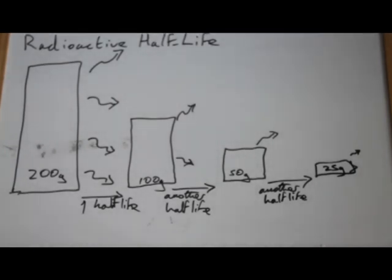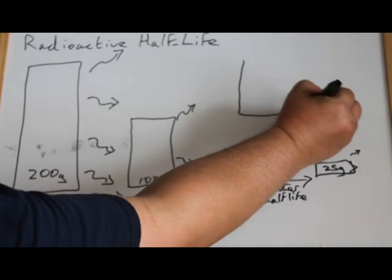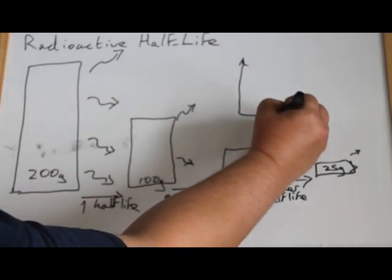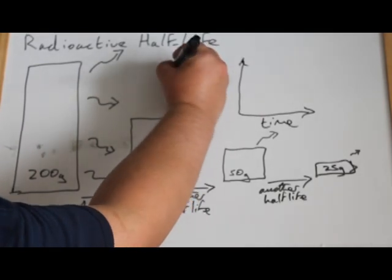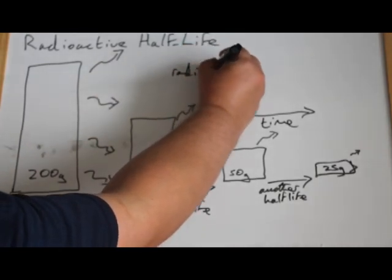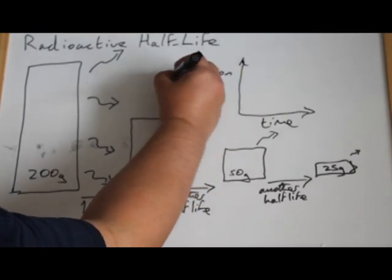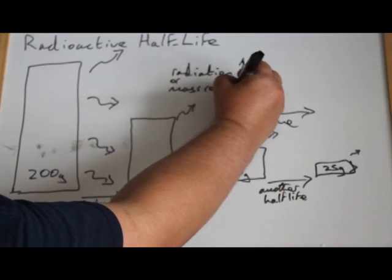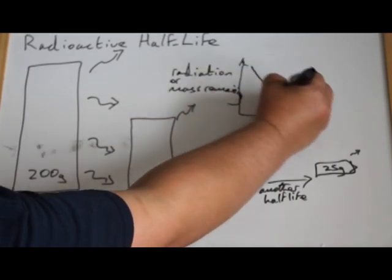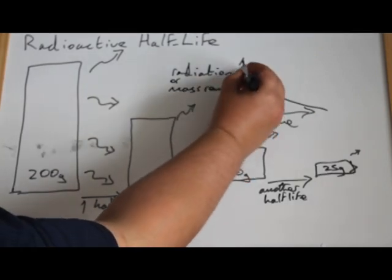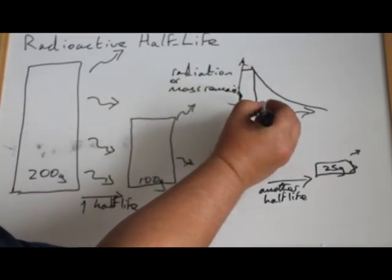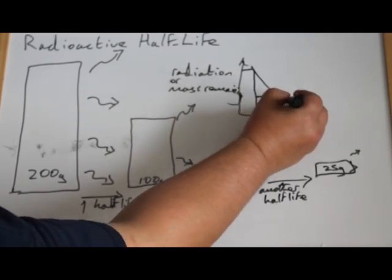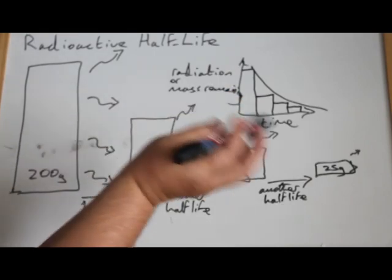Now, whether we graph the mass that we've got left or the amount of radiation being given off, either way, we finish up with a graph that looks like this over time. We might have radiation or we might have mass remaining. Either way, it looks like this. It starts off going down very quickly, because we started off with 200 grams, then we had 100 grams, then 50 grams, then 25 grams, and so on.